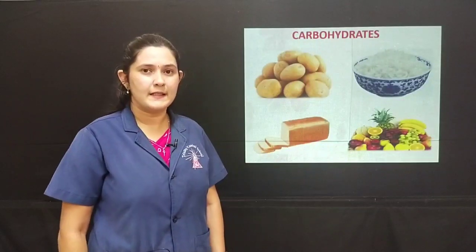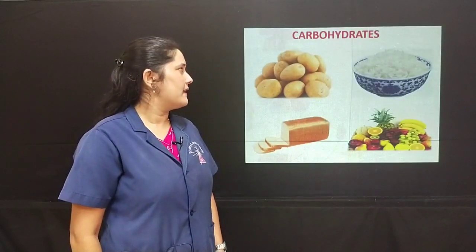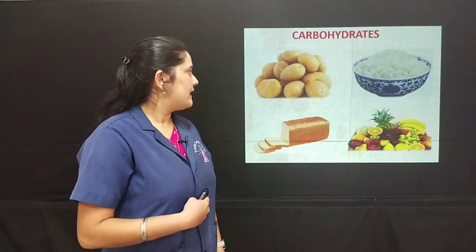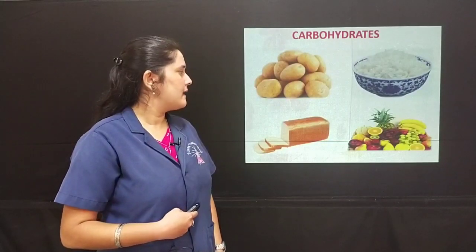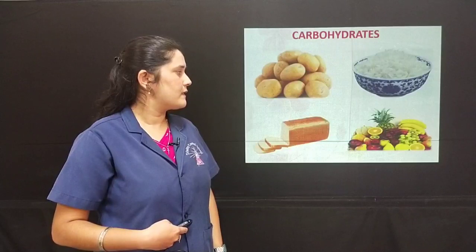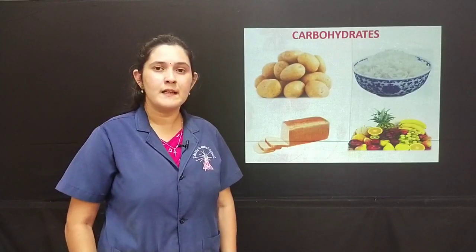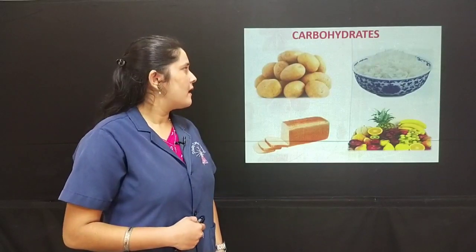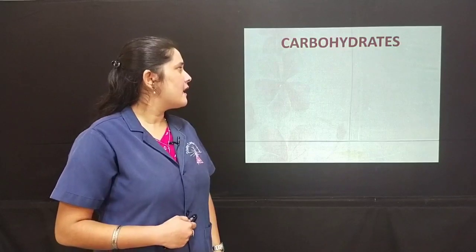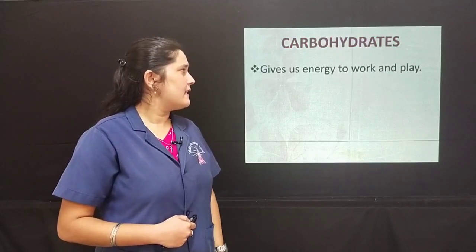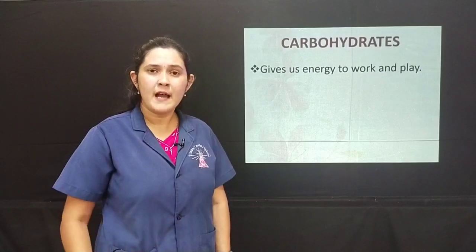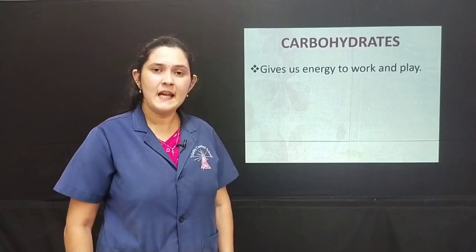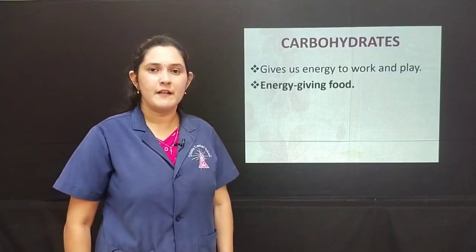The first nutrient we study is carbohydrates. Here are the pictures of the sources of carbohydrates — potato, rice, bread and a variety of fruits. All this food is rich in carbohydrates. How do carbohydrates help us? Carbohydrates give us energy to work and play. Whatever activities we do, carbohydrates play an important role. Hence, they are known as energy-giving food.